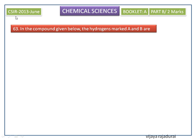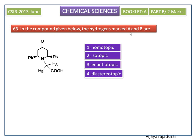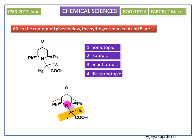Next, we see a similar type of question asked in CSIR 2013 June. The question is: in the compound given below, the hydrogens marked A and B are — options: homotopic, isotopic, enantiotopic, and diastereotopic. Here, the equivalent hydrogens are HA and HB. We need to identify whether the center is chiral or achiral. The substituents are present on the same side, so it will have symmetry. The nitrogen is considered achiral, so these two hydrogens are enantiotopic. The correct answer is the third option: enantiotopic.